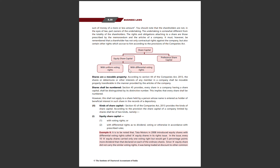Share capital is of two types: one is equity share capital, which includes equity shares, and the other is preference share capital, which includes preference shares. Within equity share capital, we also have equity shares with differential voting rights, also called DVRs, where you can assign 2 votes or 6 votes per share.